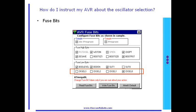Remember that programmed status is indicated by 0 in the AVR datasheet. The setting shown on your screen instructs the Mega 8 AVR that you are using the 1 MHz internal oscillator. To use the 4 MHz internal oscillator, you may click CKSEL1 in addition to the existing selection of CKSEL0.